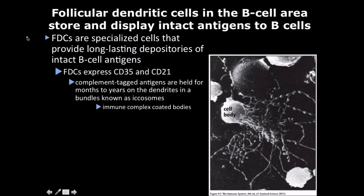Switching gears to T-dependent activation: follicular dendritic cells in the lymph nodes are a unique subclass of dendritic cell that don't actually derive from hematopoietic origins, but more from fibroblasts in the bone marrow. They have complement receptors 1 and 2. CR2, specifically, has a long flexible stalk — I literally call it 'antigen fishing' — so it can bind to totally intact antigens that can stay in the lymph node for many years for activating B-cells. CD35 is complement receptor 1, and CD21 is complement receptor 2.